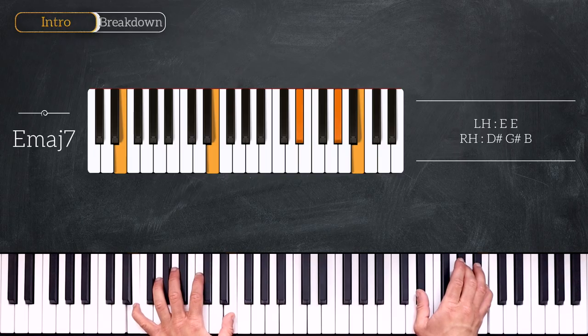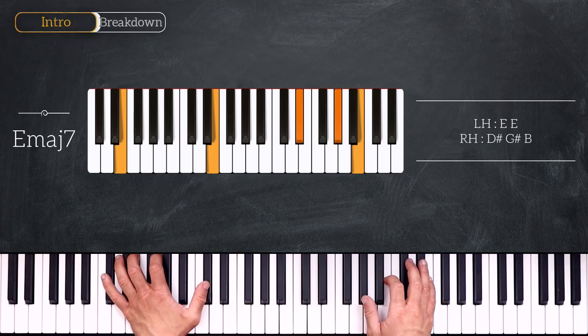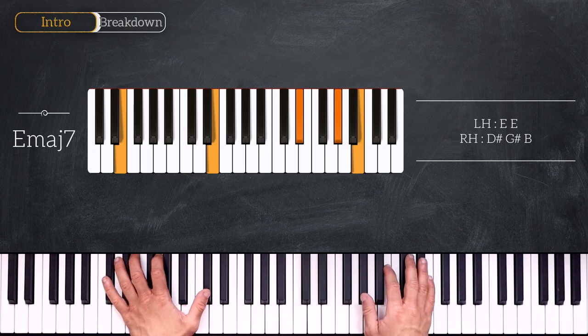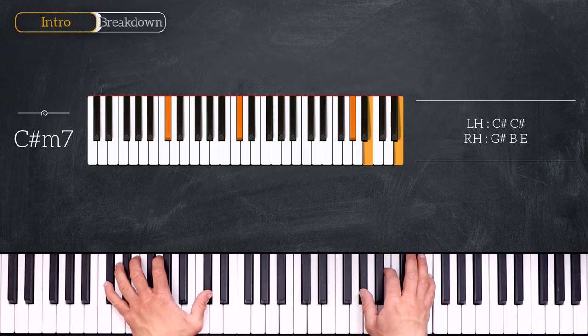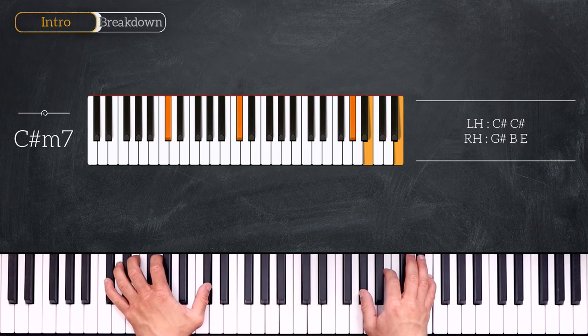Very nice. Now we'll go to the sixth degree playing this C sharp minor 7. So here we play octave C sharp on the left and G sharp, B, E on the right.